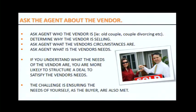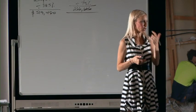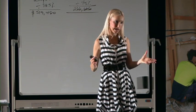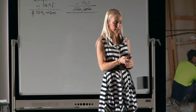In step number four, when you're seriously looking at buying a property, you need to ask the agent about the vendor. If you can find out the vendor's motivations for selling, it puts you in a good position to structure your offer to suit their needs — otherwise you're second-guessing. Get into the habit of asking the agent, 'What's the reason the vendors are selling?' Some agents won't tell the truth if they don't know you. But if you have a good relationship with agents, you'll get down to the real reason — like a couple getting divorced.